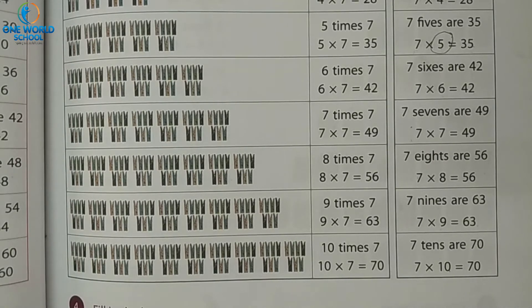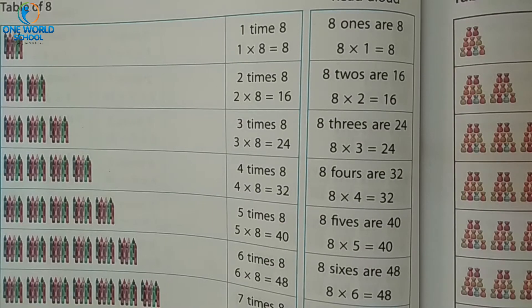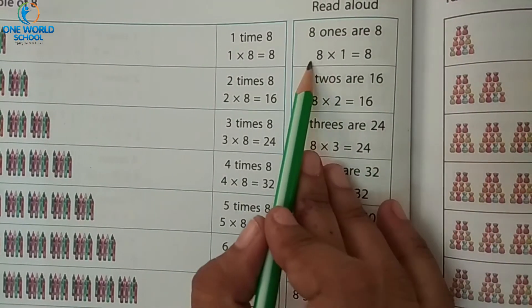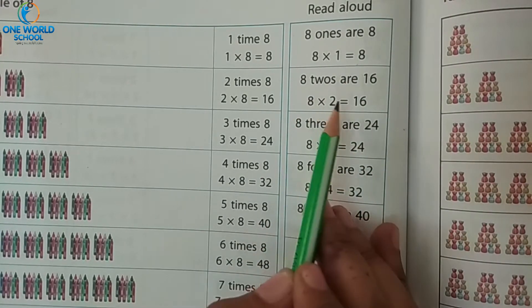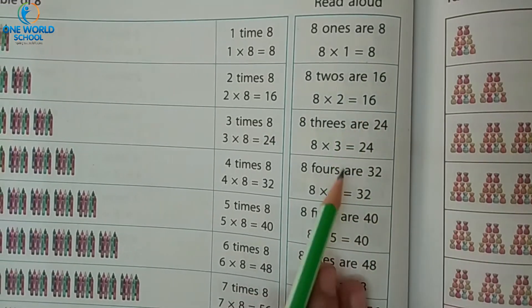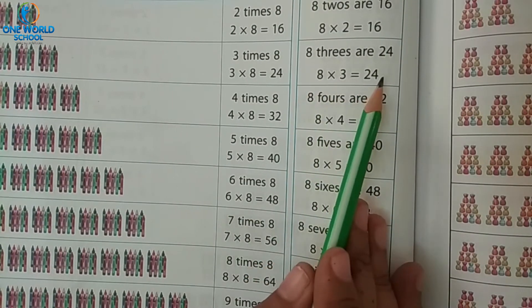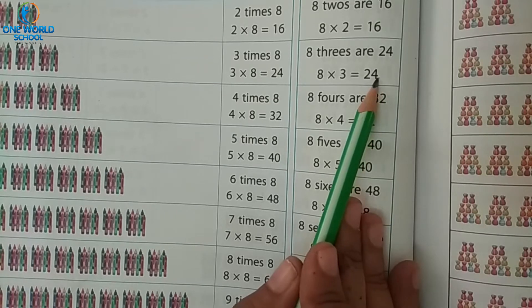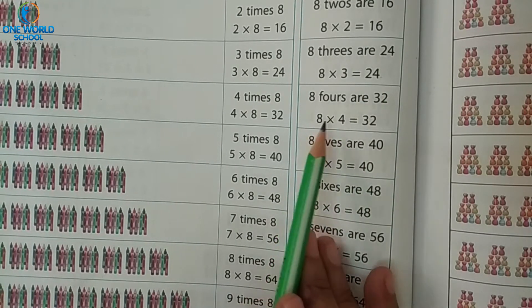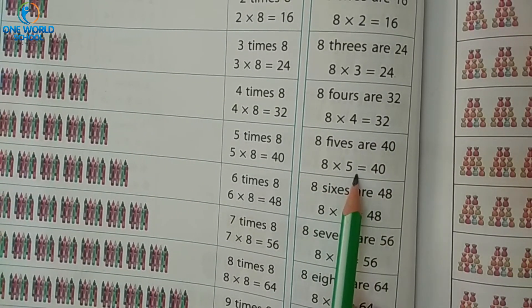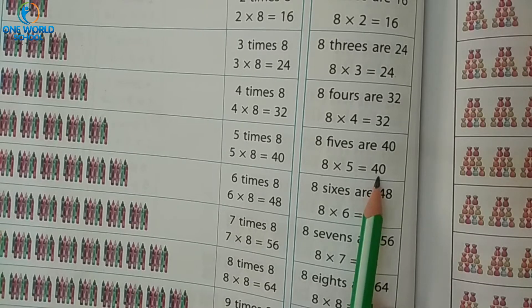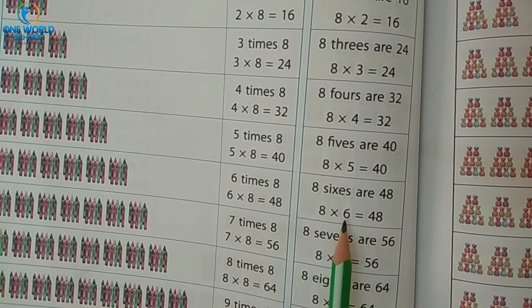Now after 7, which table will come? Table of 8. So turn the page, take the next page. Start repeating table of 8 with me. 8 ones are 48. 8 twos are 16. 8 threes are 24. 8 fours are 32. 8 fives are 40. 8 sixes are 48.